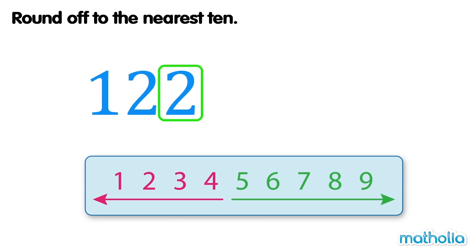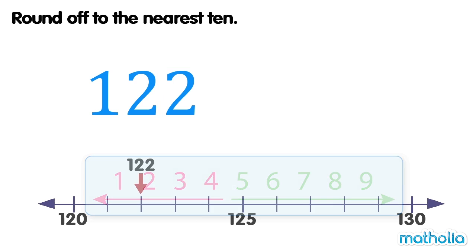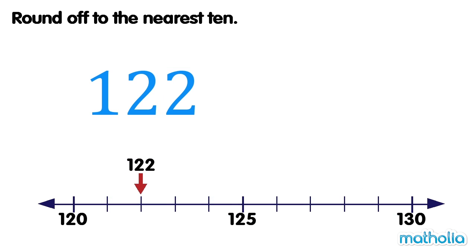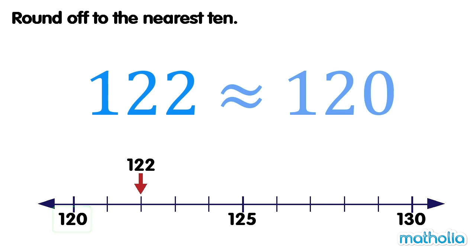Digits that are four or less are rounded down. So, one hundred and twenty-two is rounded down to one hundred and twenty. To the nearest ten, one hundred and twenty-two is approximately equal to one hundred and twenty.